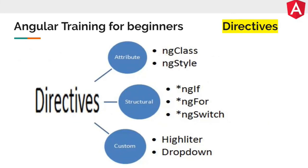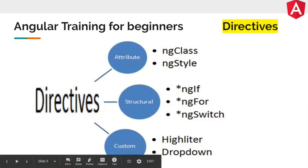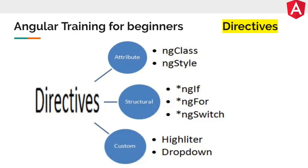Apart from the built-in directives, Angular provides you the option to create your own custom directives. You can create custom directives if something is not already available in Angular core — for example, to highlight some text in a div when the user mouses over it, or to create your own custom dropdown. There are many such cases where you need to create your own custom directives.